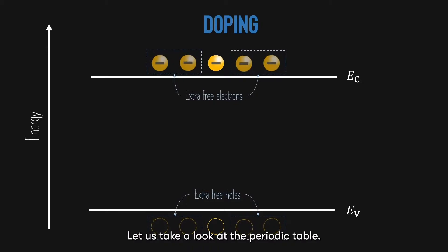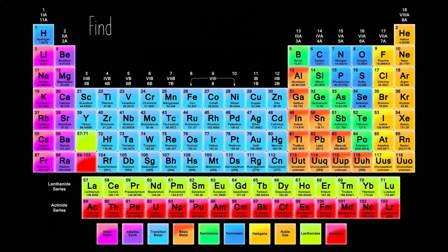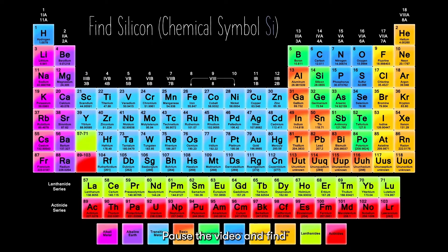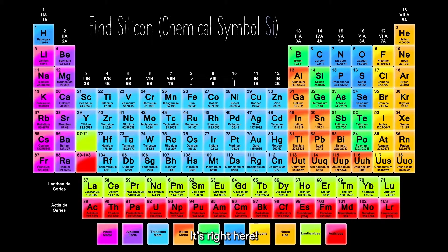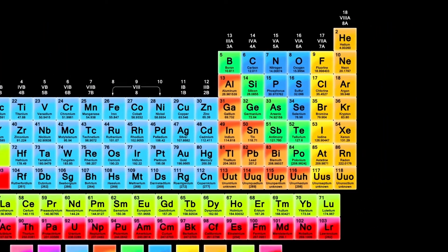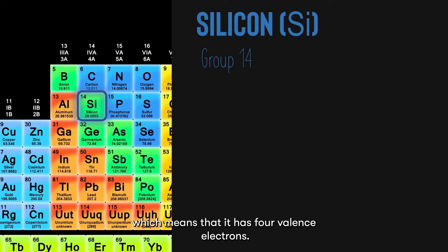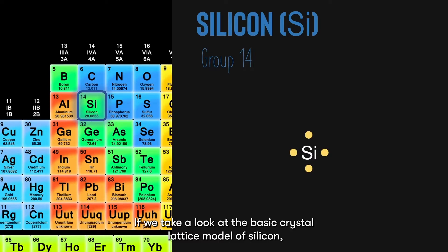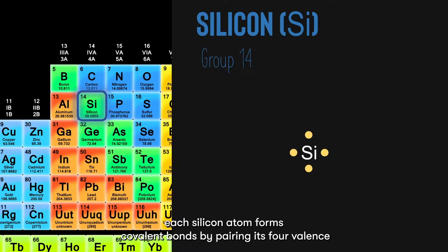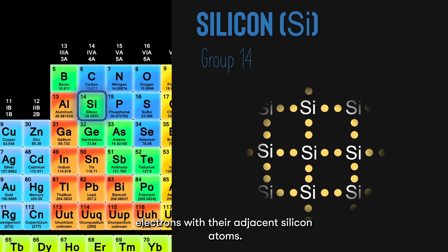To understand how this works, let us take a look at the periodic table. Pause the video and find silicon — its chemical symbol is Si. Silicon belongs to group 14, which means that it has four valence electrons. If we take a look at the basic crystal lattice model of silicon, each silicon atom forms covalent bonds by pairing its four valence electrons with their adjacent silicon atoms. This forms a stable crystalline silicon lattice.